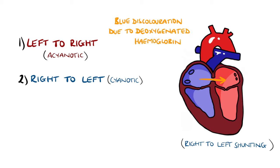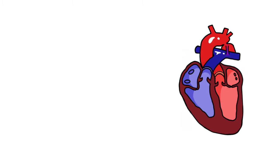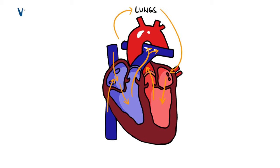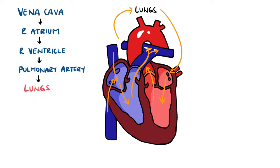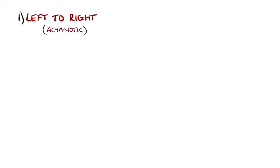Obstructive defects are the third type. In normal circumstances, blood travels from the superior and inferior vena cava to the right side of the heart, through the right atrium, then right ventricle, into the pulmonary artery and vasculature within the lungs for oxygenation, before being returned via the pulmonary veins to the left atrium, then left ventricle, before being pumped into the aorta. The pressure on the right side is typically much lower than on the left, so if there is a defect connecting both sides, blood will flow from high pressure to lower pressure.